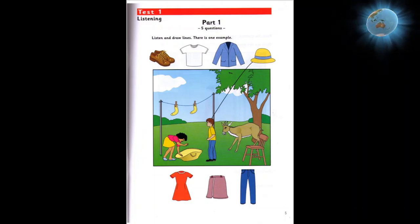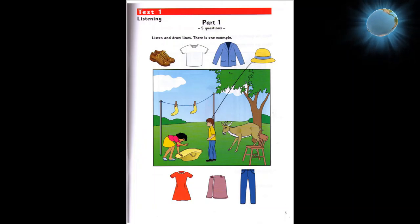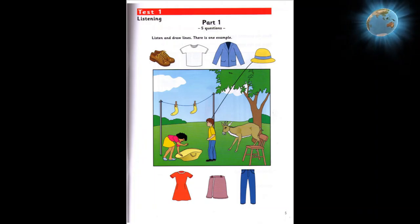Four. Can you find the dress? Yes. Put it on the girl's arm. Okay. The dress is on the girl's arm now.